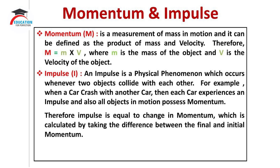Now let us try to understand the next term, that is momentum and impulse. Momentum is a measurement of mass in motion and it can be defined as the product of mass and velocity. Therefore, capital M denotes momentum and is equal to small m into capital V, where small m is the mass of the object and capital V is the velocity of the object.